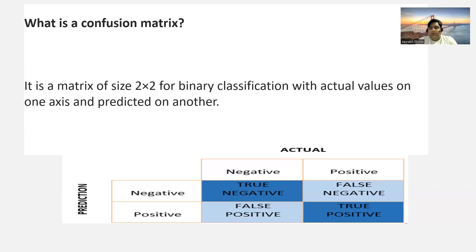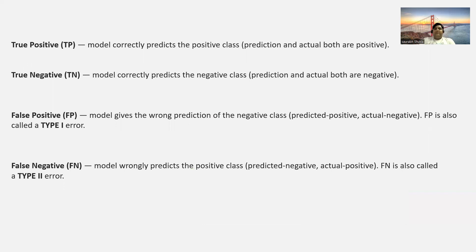To calculate accuracy, you need true negative and true positive on the higher side. The formula is: true negative plus true positive divided by everything — true negative, true positive, false negative, false positive — add everything in the denominator. True positive means the model correctly predicts the positive class; both prediction and actual are positive. True negative means the model predicts the negative class; both prediction and actual are negative. These two should be on the higher side.